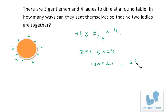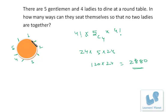So that's 2880. There was a slight variation in the concept: first arrange the five gentlemen in 4! ways, then find the five vacant places between men, choose four of those places for the ladies, and finally arrange the four ladies in 4! ways. That gives us the answer.